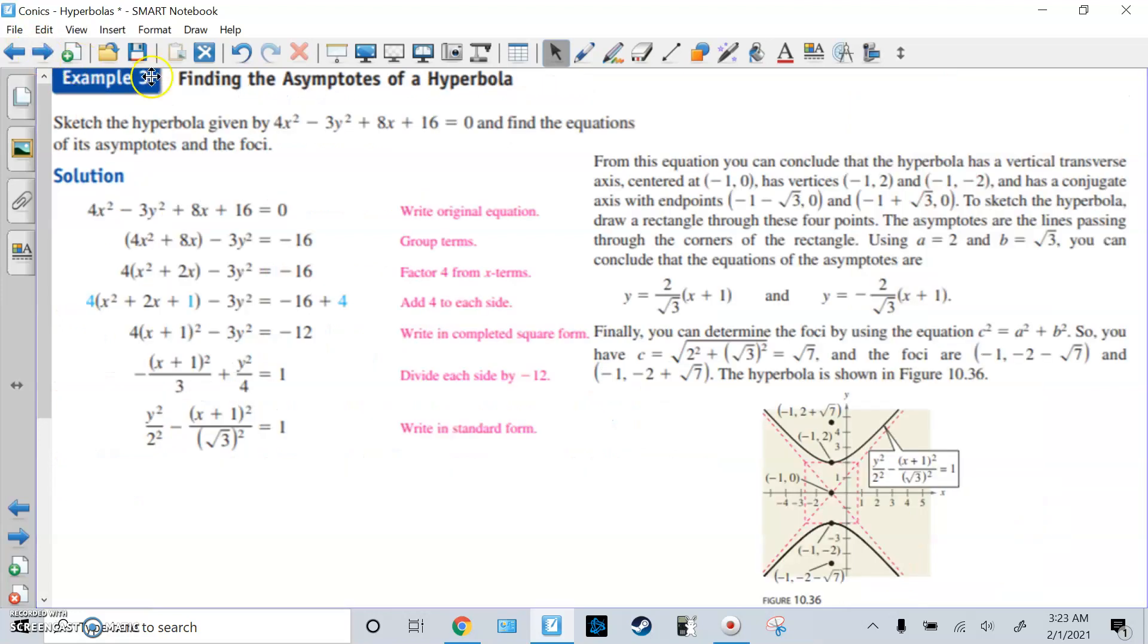Find the asymptotes of a hyperbola. Sketch this equation in general form. Find the equations of the asymptotes. So we're going to complete the square. Group the x things together and the y things together. We're going to factor out this negative 4 to make this a 1.